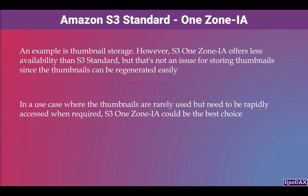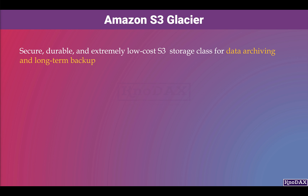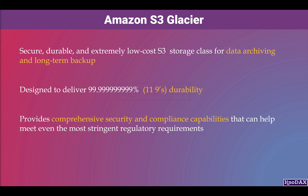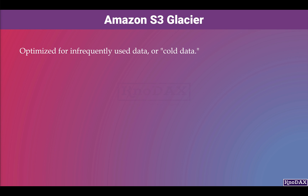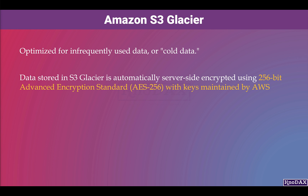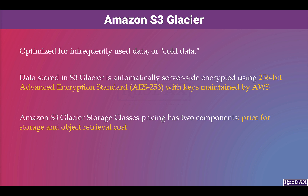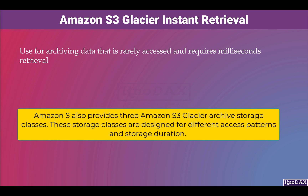Amazon S3 Glacier is a secure, durable, and extremely low-cost S3 storage class for data archiving and long-term backup, designed to deliver durability of 11 nines. It provides comprehensive security and compliance capabilities and is optimized for infrequently used or cold data. S3 Glacier has a retrieval time of minutes or a few hours to get the first byte, and data is automatically server-side encrypted using AES-256 with keys maintained by AWS. Pricing has two components: storage cost and object retrieval cost.